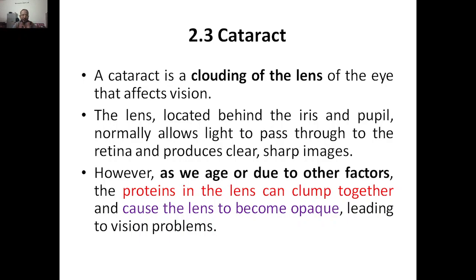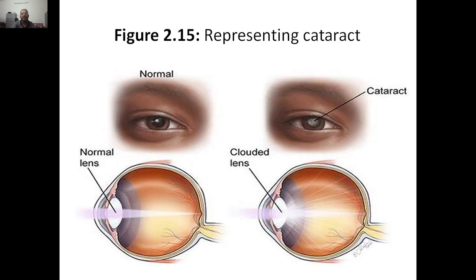As we age, the proteins maintaining their shape and structure — like rhodopsin and the three different cone pigments — will start to clump together. Once they clump together, they make the lens opaque, and it will not pass light as efficiently as before, leading to vision problems.